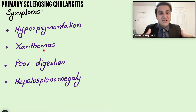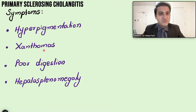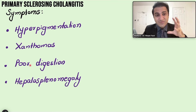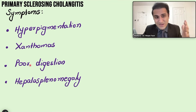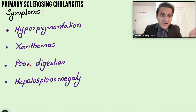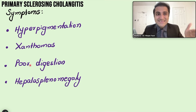Lipid deposition in tissues results in xanthomas. Poor digestion occurs because bile is not reaching the intestines to emulsify fats — poorly digested fats pass out as diarrhea. Patients suffer deficiencies of fat-soluble vitamins A, D, E, and K due to impaired fat absorption.